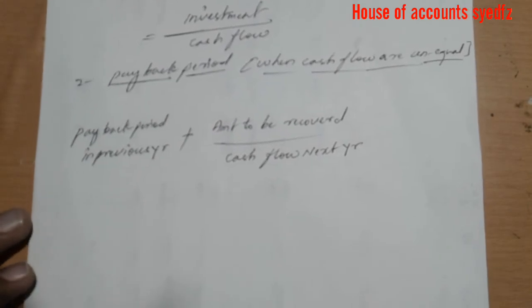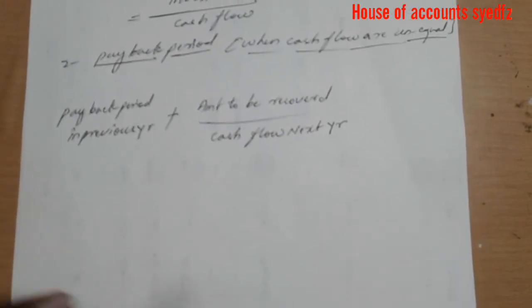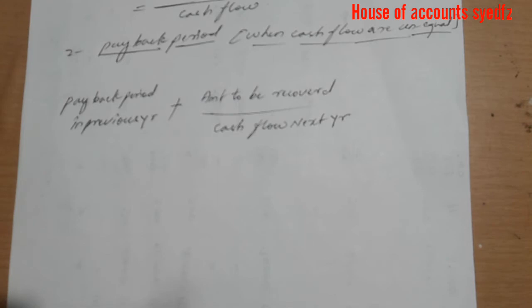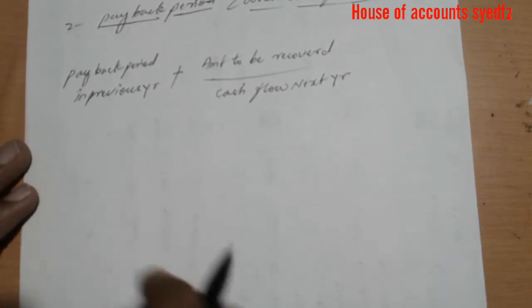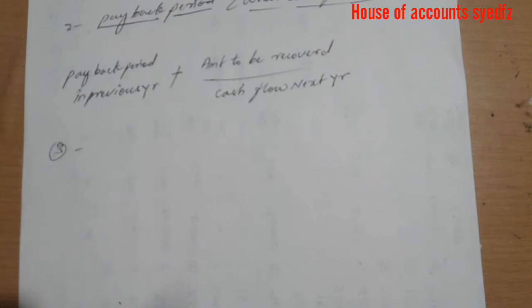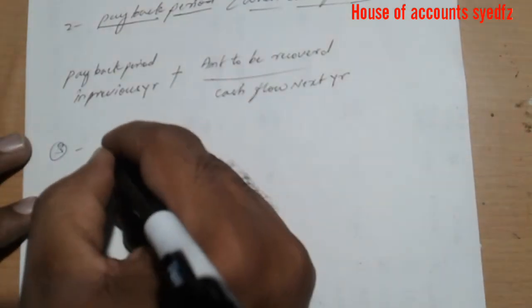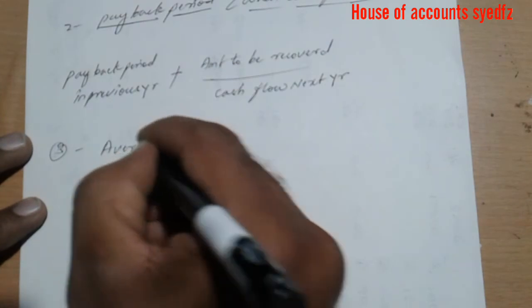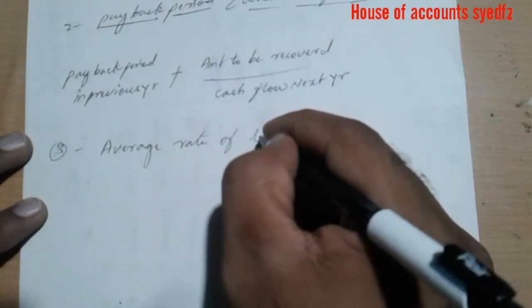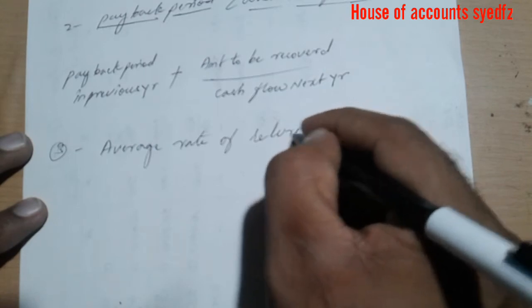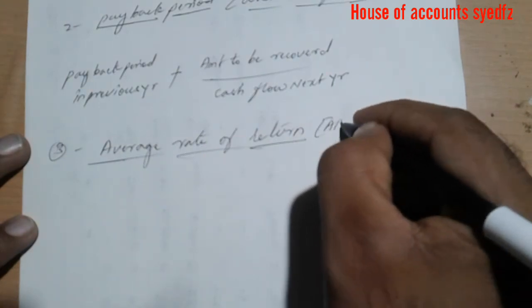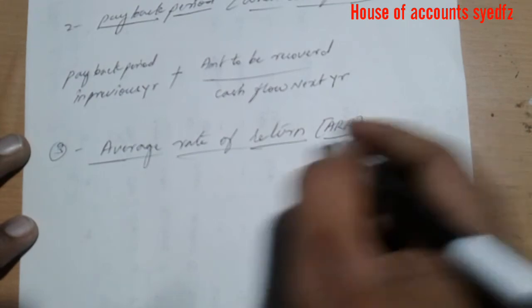Payback period means if we invest in one project, how many years will it take to get our investment back. Now, average rate of return — if we invest in a project, how much rate can we earn averagely from this project? That is known as average rate of return, ARR for short.